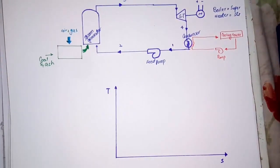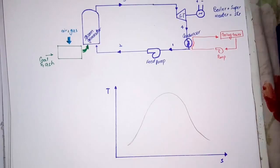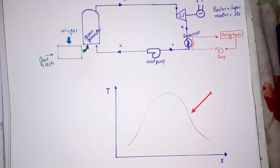Before we discuss the TS diagram, let me tell you something about this dome. This dome shows the thermodynamic properties of water. The shape of the dome is different for different working fluids. This line is the saturated liquid line and this region is the saturated liquid region — meaning only liquid. This line is the saturated steam line and this region is the saturated steam region — meaning only dry steam. The highest point of the dome, where the saturated liquid and saturated steam lines meet, is the critical point. Beyond this point we cannot distinguish between the liquid and vapor phases.